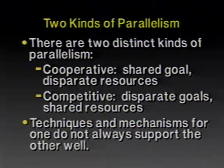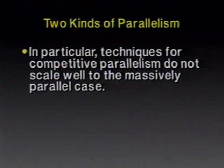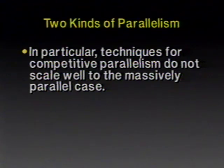With cooperative parallelism, there is a shared goal and you're trying to bring disparate resources to bear on that single problem. With competitive parallelism, there are disparate goals and a shared resource, with competition for that scarce resource. The techniques and mechanisms for one kind of parallelism don't often scale well to the other kind. Techniques for competitive parallelism — monitors, semaphores, spin locks — work well when you've got 10 things competing, but the same protocols that allow 10 workstations to share a printer don't work well when you've got 1,000 workstations.